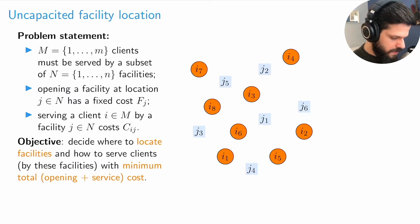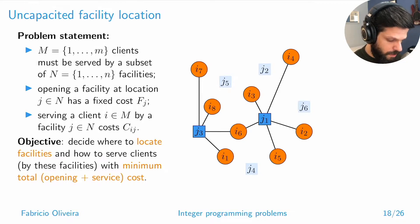We take into account not only the cost of opening the facility but also a cost associated with serving the demand at the client. Serving client i with facility j has cost c_ij, and we pay f_j for opening the facility. Our objective is to decide where to locate facilities to minimize the combination of opening and service costs. This could be one possible solution where you locate j3 and j1, two facilities, and serve these demand points with i6 partially served by j3 and partially by j1.